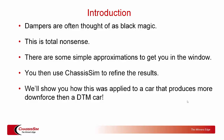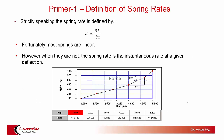First things first — primer number one: defining spring rates. The spring rate is the change in spring force over the change in displacement. Most springs are linear, though there are exceptions with nonlinear springs or bump rubbers. Even in that situation, the spring rate is simply the change in force over the change in slope — it's the gradient. All you've got to do is take the slope of your spring deflection at your point of interest. That's all a spring rate is.